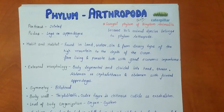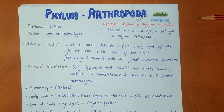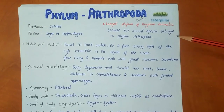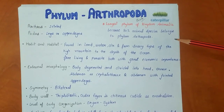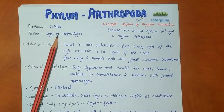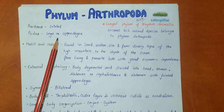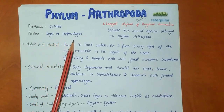Firstly, we are going to discuss about phylum Arthropoda. It is the largest phylum of kingdom Animalia because 80% of animal species belong to phylum Arthropoda. The word 'arthro' means jointed and 'poda' is related to legs or appendages.